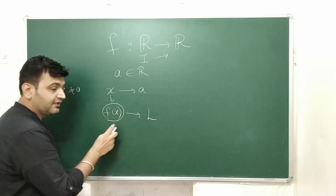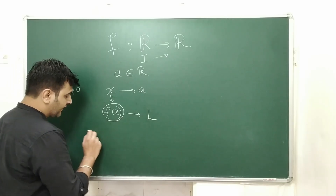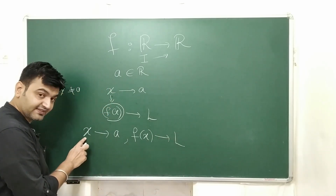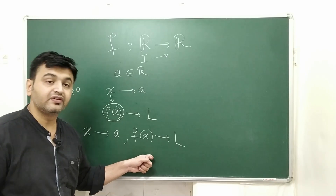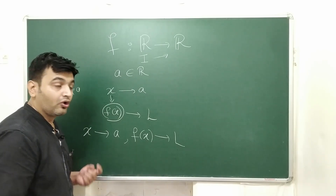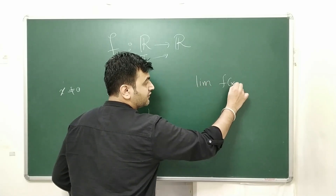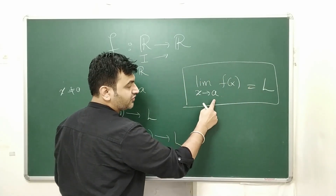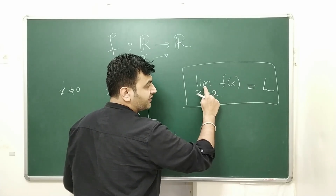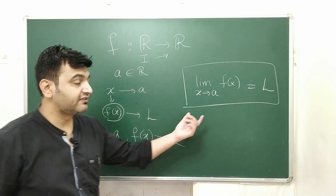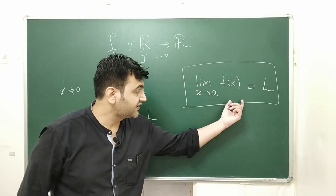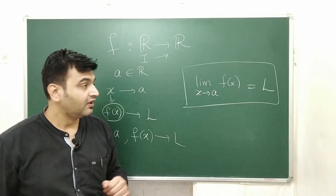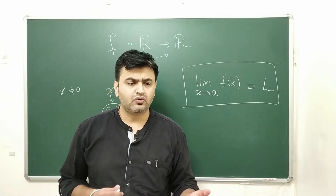As X approaches towards a, you look at the images and see where they approach. Suppose the images approach a number L — then we say that L is the limit of the function. One way to write this is: as X approaches a, if f of X approaches L, then L is the limit. Another way is: the limit of f of X as X approaches a is L.